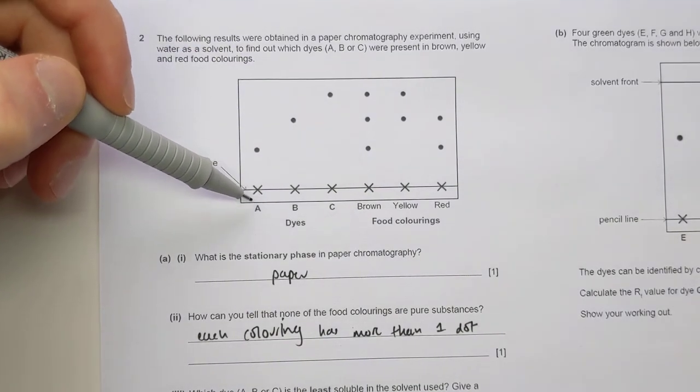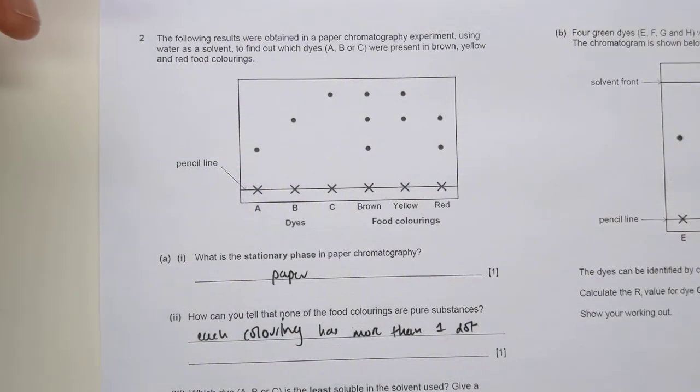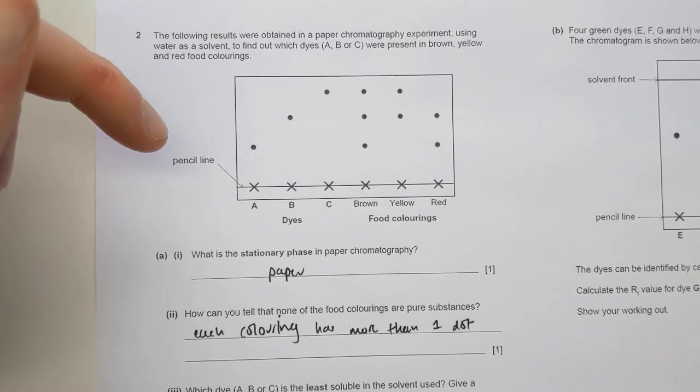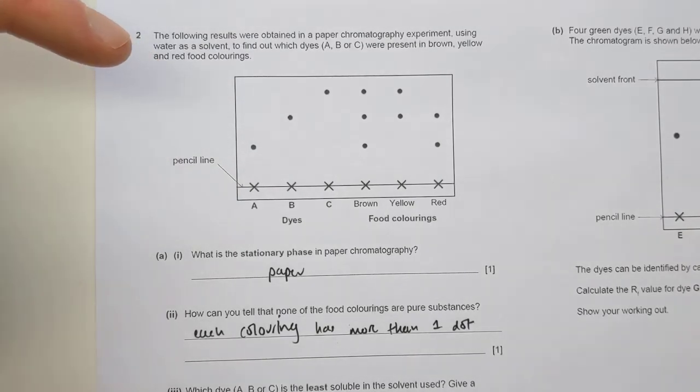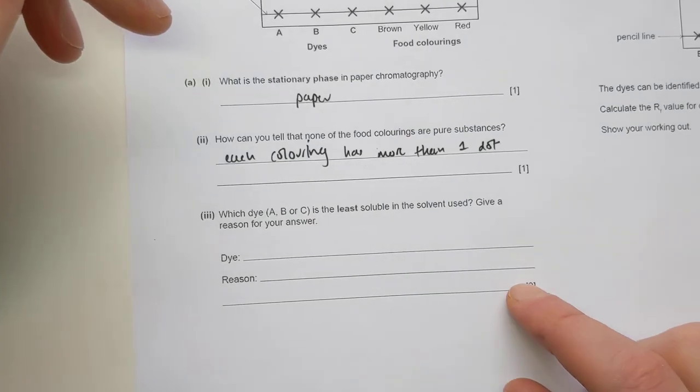The less soluble it is in the water, the more it's going to stick to the bottom because it's not having it being dragged up by the water. So you can tell which substances are more or less soluble in water by how high they get up the paper. The ones at the top will be very soluble because the water dragged it a long way. The ones which are near the bottom are not very soluble because the water isn't able to drag it that far.